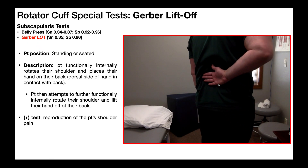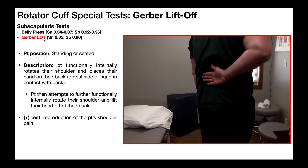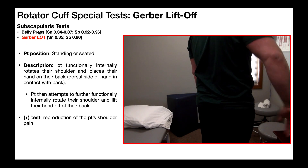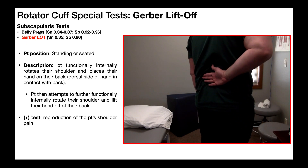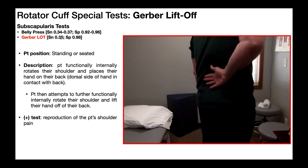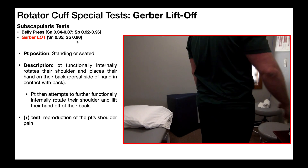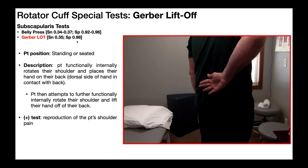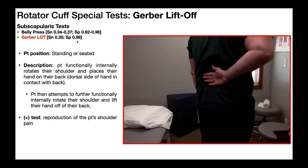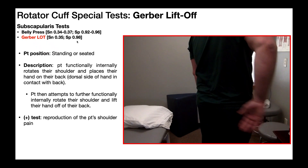Here's another view of the Gerber liftoff test. It has fairly similar psychometric properties to the belly press test. The sensitivity is pretty poor at about 35%, so we really aren't going to use that value. The specificity is 0.98 or 98% — in other words, if somebody has a positive Gerber liftoff test, there's a 98% chance that they have a subscapularis tear.